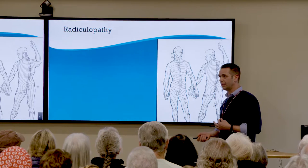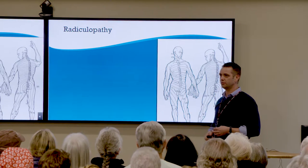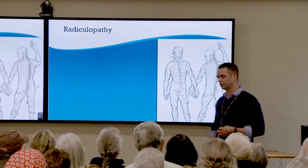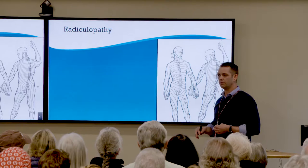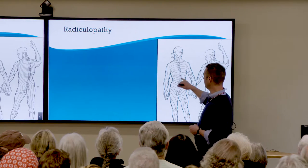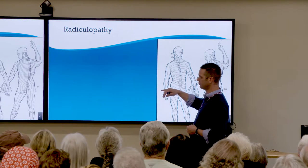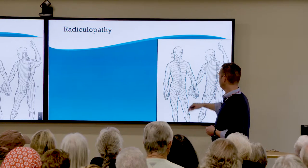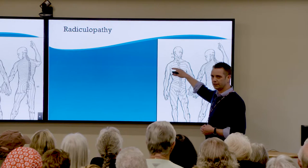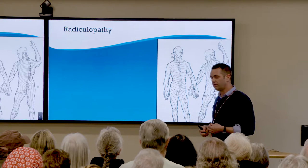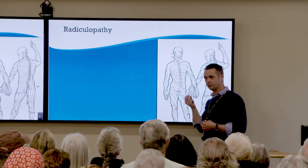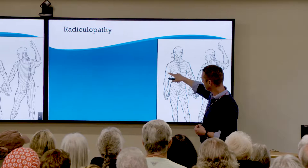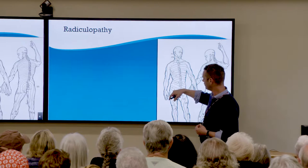Radiculopathy — 'radic' is Latin for root, meaning the nerve root. When we say radiculopathy, which may appear in your chart, it means radiating arm or leg pain when caused by pressure on one of those nerve roots. They all go to different places. For instance, if you have a C4-5 disc herniation pushing on the C5 nerve, it's going to radiate out to the upper chest and shoulder area, not going much farther down the arm.